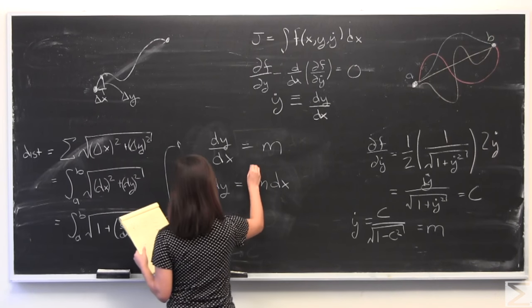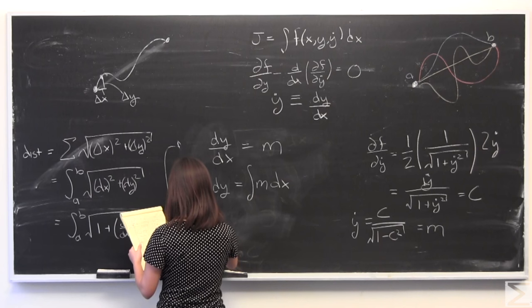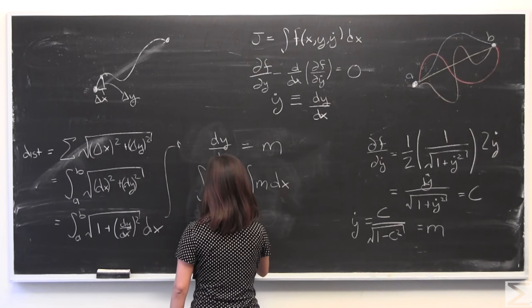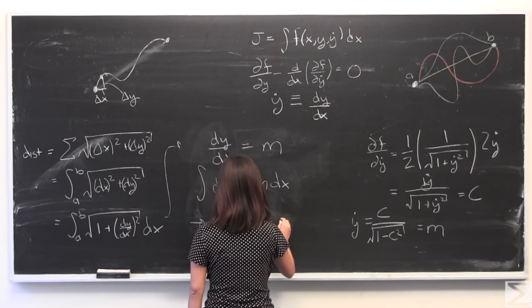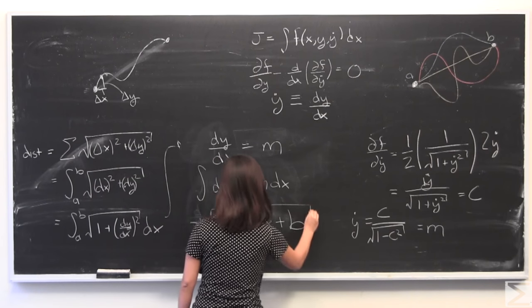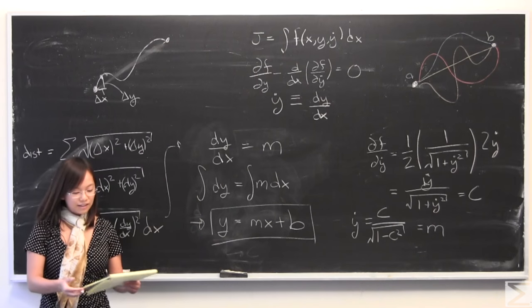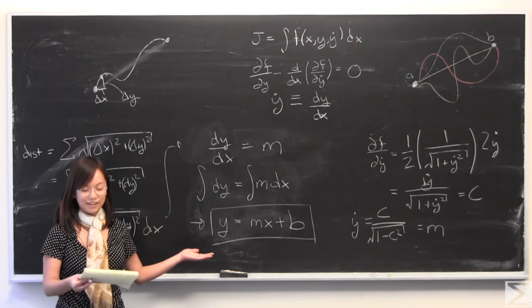I'm going to integrate both sides and then get y is equal to m x plus a constant. We're going to call it b. You might just recognize that as the equation for a line with a constant slope.